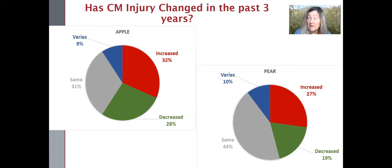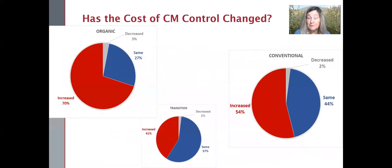This is a bit surprising since codling moth prefer apples over pears, especially a winter pear like an Anjou. Here's another pretty diagnostic question. Even if you haven't experienced more damage, has it cost you more to keep damage from increasing? This is a second indirect way of getting at increasing pressure.